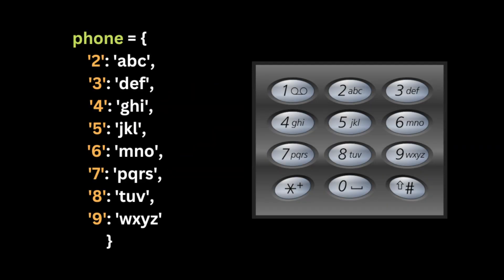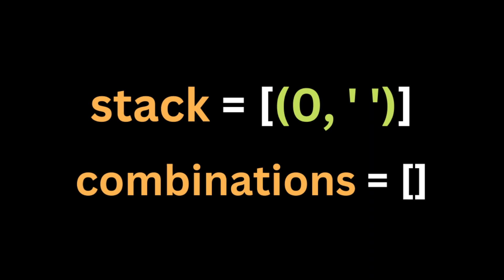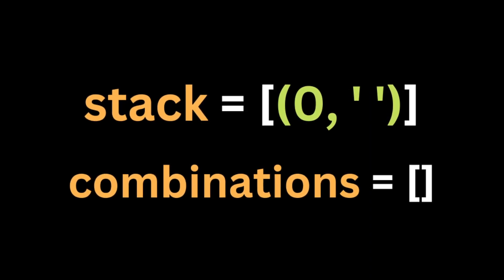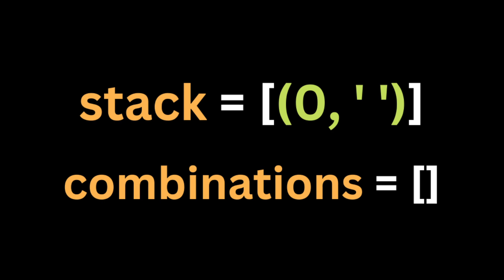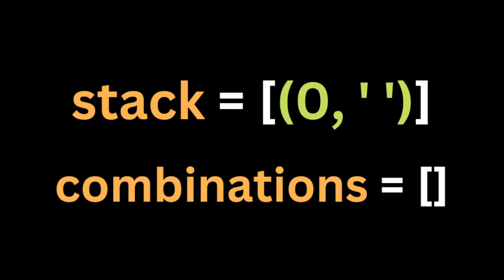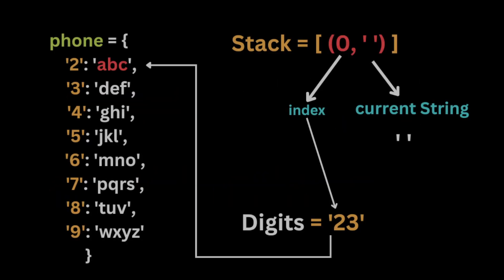Let's say for example the input is '23'. The first thing we're going to do is create a dictionary called 'font' that will have the numbers as keys and the letters as values. Then we create a stack data structure and store the index and the current string at each iteration as a tuple, starting with zero as index and an empty string. Then we initialize an empty array called 'combination' to be the output.